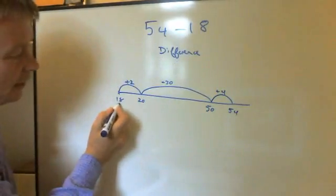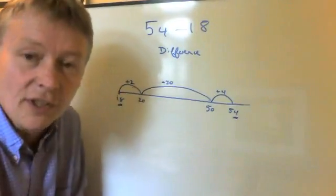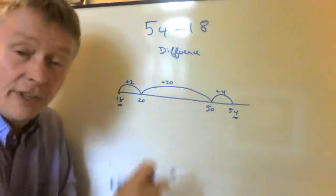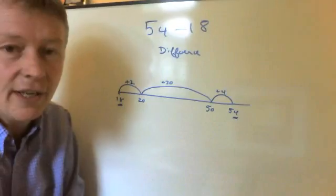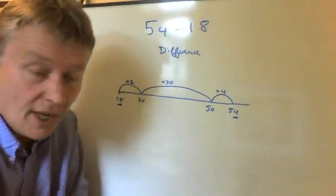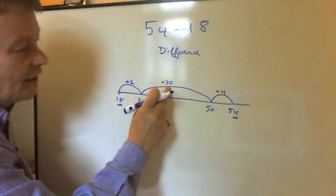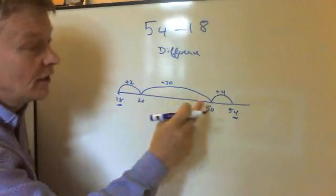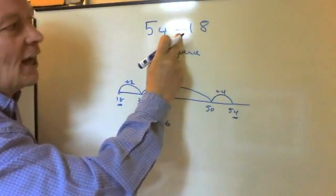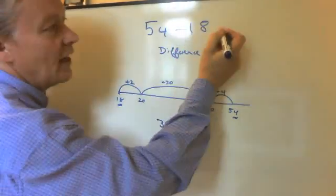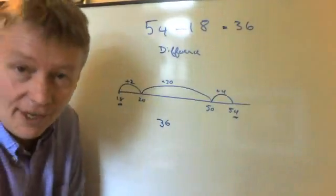So I've gone from 18 to 54, and the difference between the two is the sum of these jumps. I've got two here, 30 here, and four here. So if I add all those jumps together, I'm going to end up with 36. 30 plus two is 32, plus four is 36. So in other words, the difference between 54 and 18 is 36, or 54 take away 18 is 36.